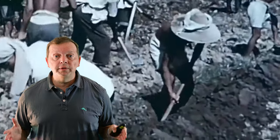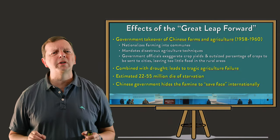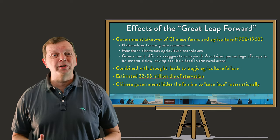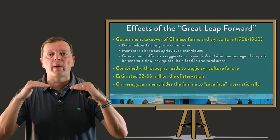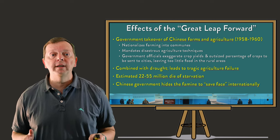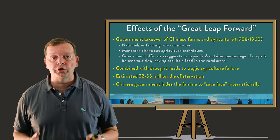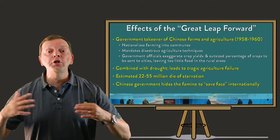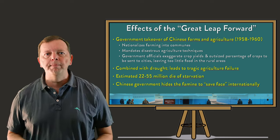The government would press the leaders of these communes to increase the harvest and would mandate they use some unproven agricultural techniques. Unfortunately, these were horrible ideas, and instead of actually increasing the amount of food raised, it meant fewer crops. This was especially devastating as drought also slashed food production at the same time. Many commune leaders would exaggerate how much food they raised in order to gain favor with the government.